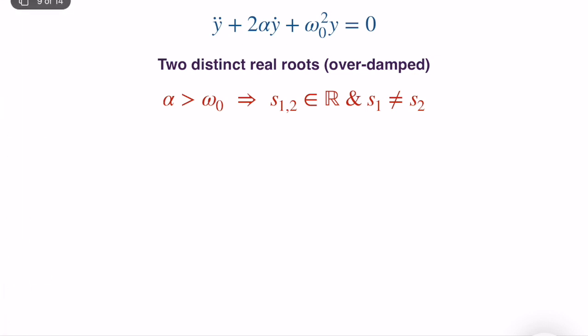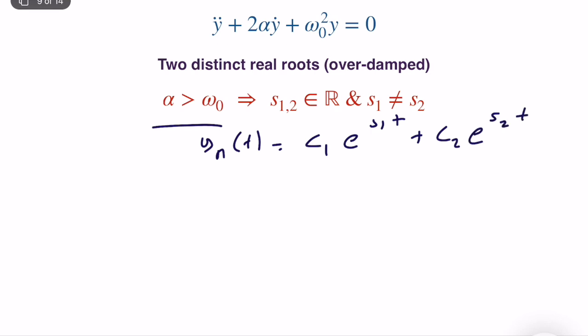Case 1: Two distinct real roots — alpha is greater than omega-zero. We have S1 and S2 where S1 ≠ S2. The homogeneous solution is: y(t) = C1·e^(S1·t) + C2·e^(S2·t). We already computed S1 and S2. What we need is to compute C1 and C2 using the initial conditions on the capacitor and inductor.